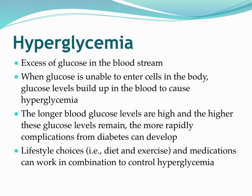People can get positive reinforcement when they see that the lifestyle choices they're making are having a recognizable impact on their hyperglycemia — seeing that when they control their diet and get some exercise in, their blood glucose level actually lowers. This positive feedback is only possible if we educate them and give them the tools they need to get that positive reinforcement.